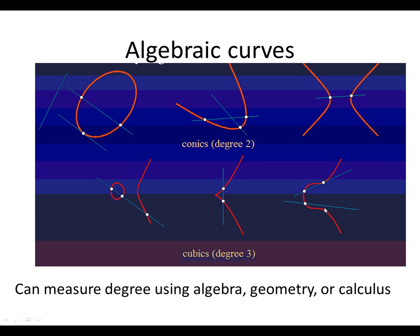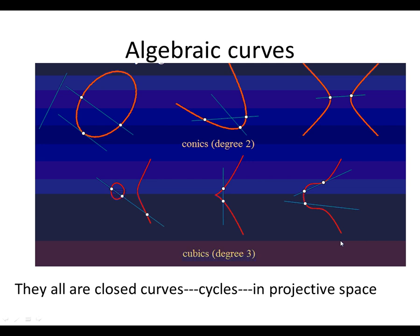A conic intersects a line by Bezout's theorem in two points. A cubic should intersect in three—one, two, three. Here it looks like it's only intersecting twice, but there are issues with the points at infinity and complex numbers. You can measure the degree of a curve using algebra, geometry like intersecting the line, or calculus.